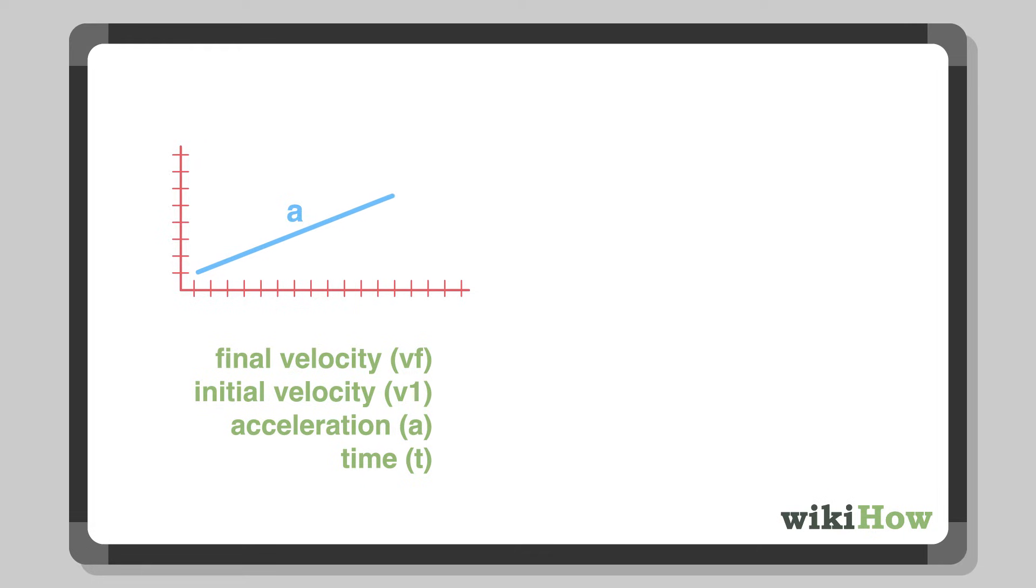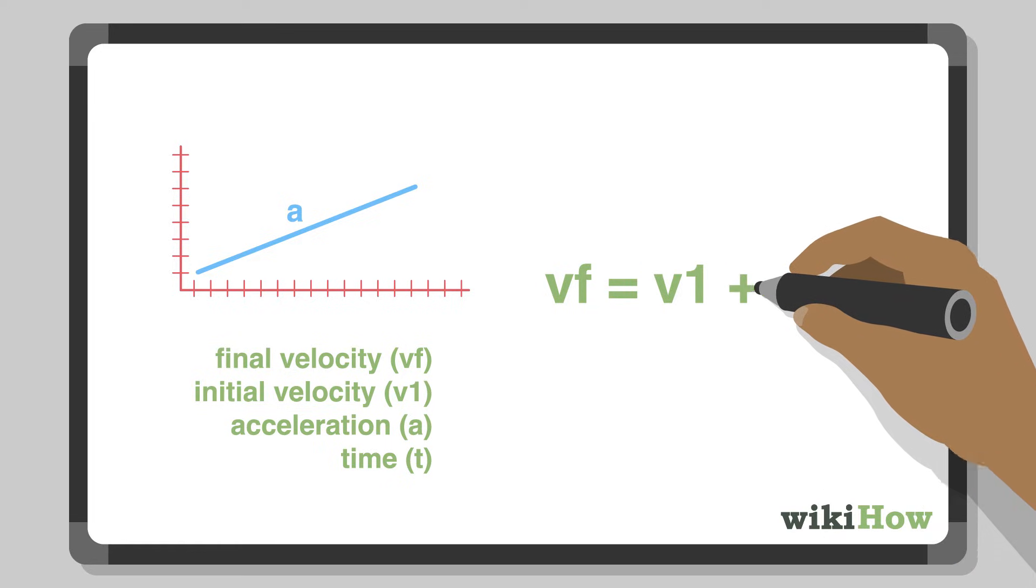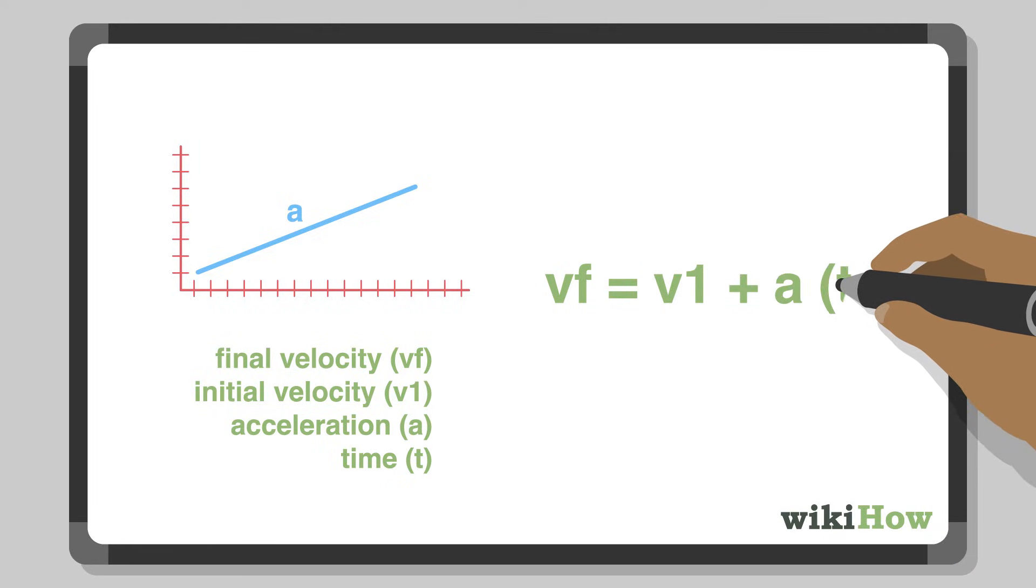If you're finding the velocity of an object that's accelerating instead of moving at a constant rate, things get a little more complicated. If you know the acceleration rate of the object, you can find the final velocity using the formula vf, final velocity, equals v1, initial velocity, plus at, acceleration times time.